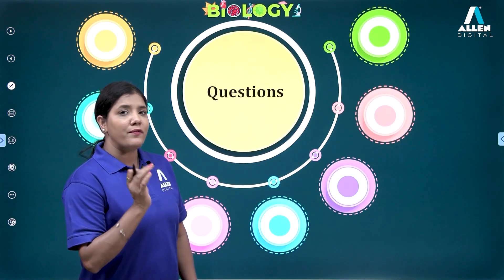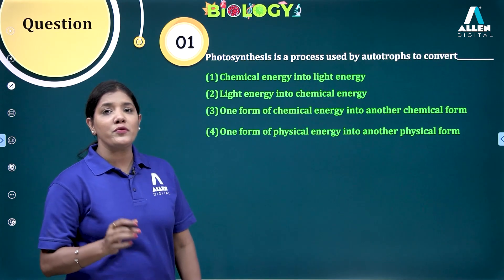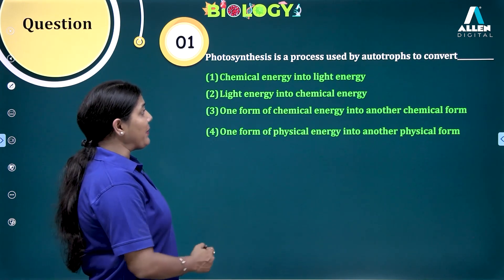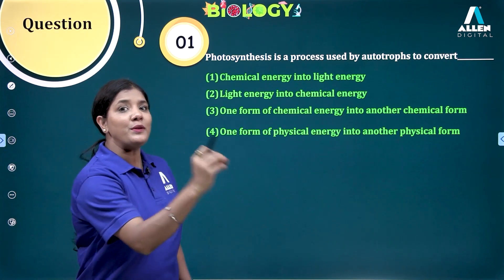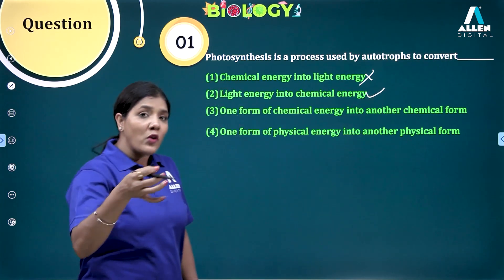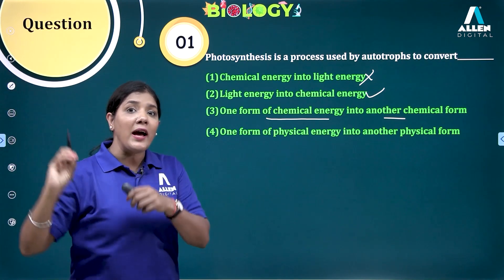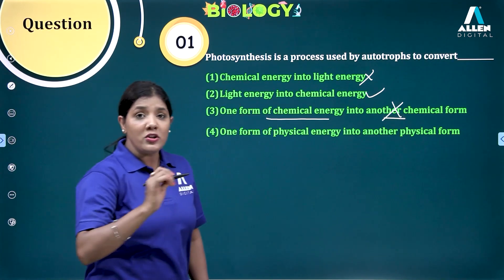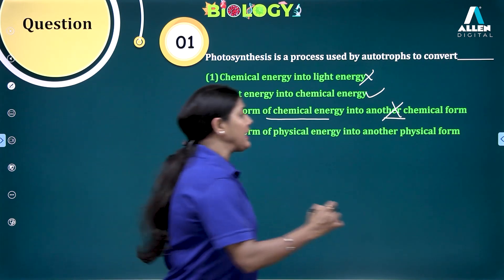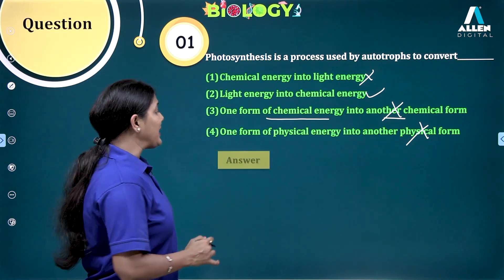Now let us solve some questions. The first question: photosynthesis is a process used by autotrophs to convert which form of energy into which other form? Option: chemical into light energy — no. Light energy into chemical energy — true. One chemical form into another chemical form — no, it is conversion of physical solar energy into chemical form. Physical energy into another physical form — no. The correct answer is light energy into chemical energy.